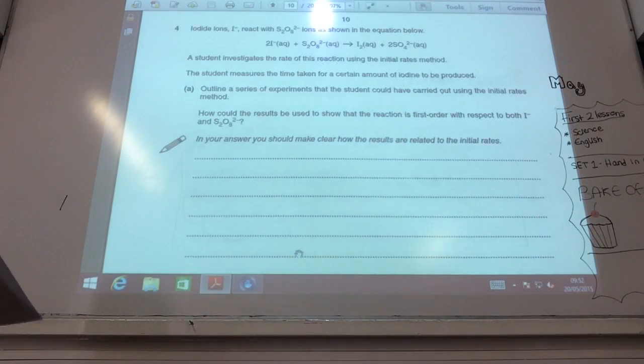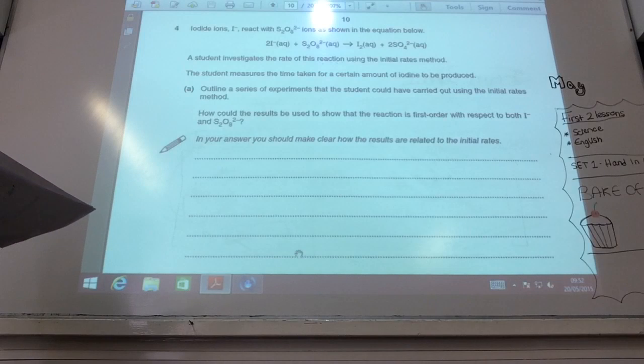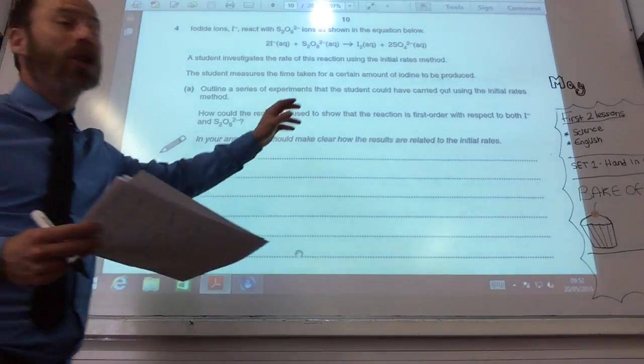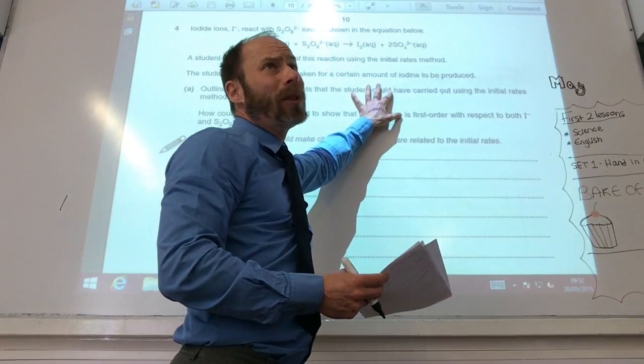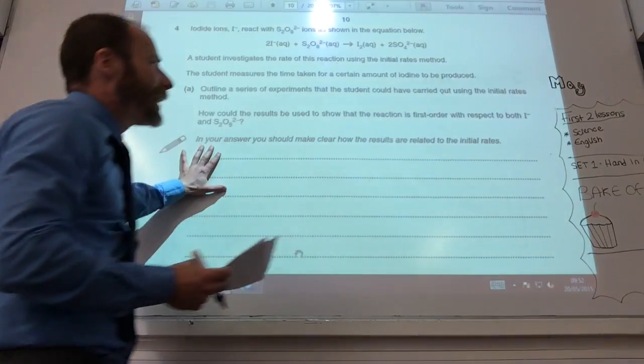Okay, so I don't like this question, but many of you didn't. So, how do you do this? They want you to use initial rates. So if you start talking about measuring half-lives and all that, it ain't going to happen. They want you to talk about initial rates.